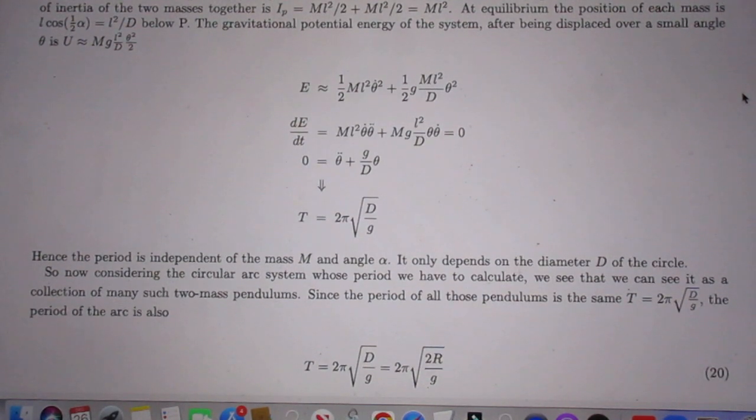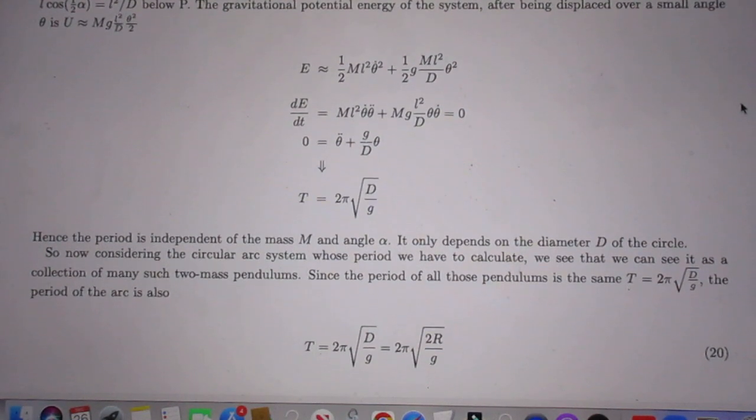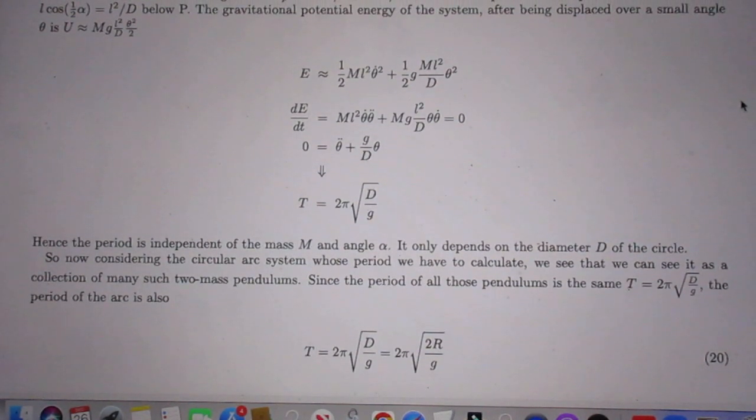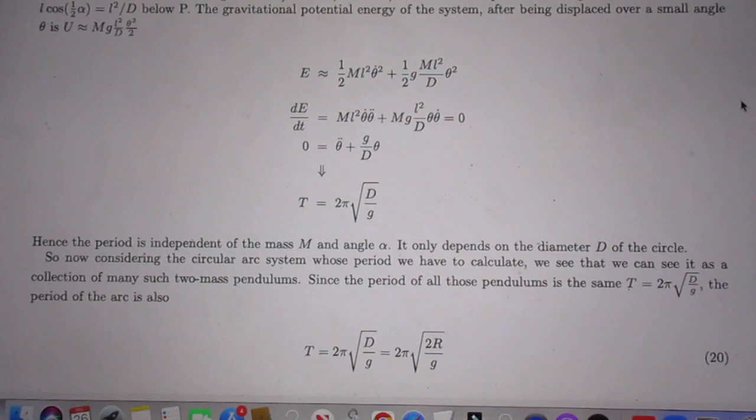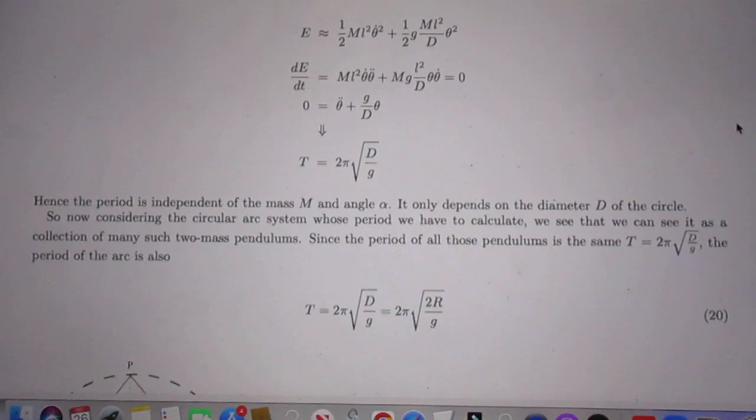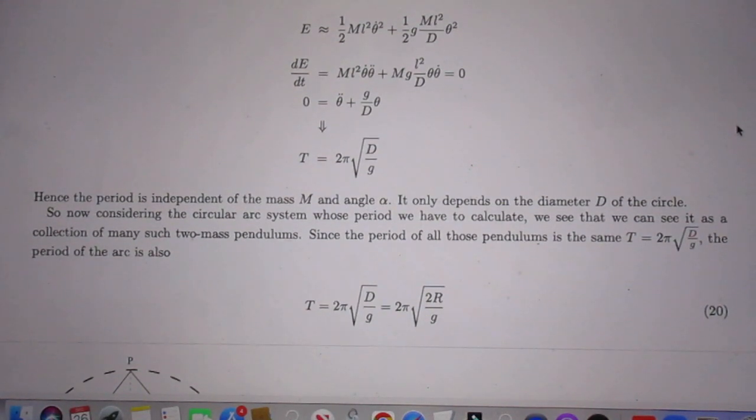The gravitational potential energy of the system, after being displaced over an angle theta, and I mention here the angle theta, is—and I will not read this, you have to look at what I wrote. So I write the total energy, which is a classic way to solve this problem, then I take the derivative of the total energy, and then I get a differential equation, which is very easy to solve.